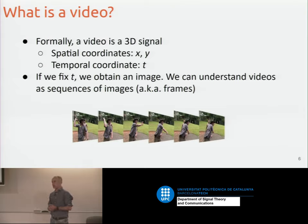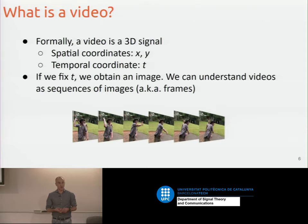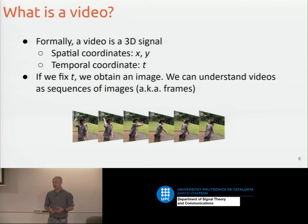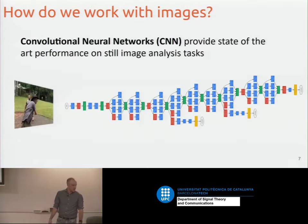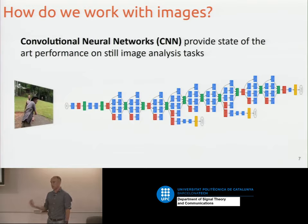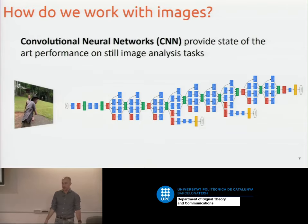Let's think about what a video is. Videos are not more than just a sequence of images. We can think about that as a volume with spatial and temporal coordinates, or as a sequence of frames — which connects to why I presented RNNs in the previous lecture. You already know how to deal with still images using convolutional neural networks, and that's going to be our starting point.